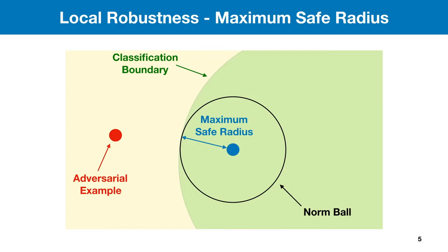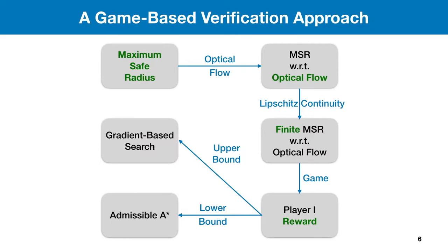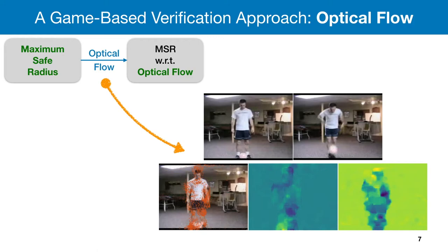To quantify robustness, we study the maximum safe radius problem, which computes the minimum distance from the original input to an adversarial example. We propose a game-based verification approach. Because we work with videos instead of single images, we extend maximum safe radius to that with respect to optical flow, and by utilizing Lipschitz continuity, we transform it into a finite optimization problem. This problem is further reduced to the computation of a player's reward in a two-player turn-based game, where player one chooses which optical flow to perturb, and player two imposes atomic manipulations within the selected flow.